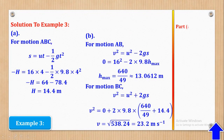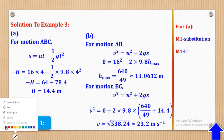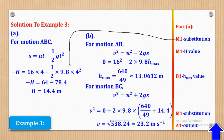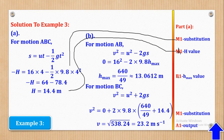Let's see how the marks can be awarded. For part A, M1 is for substitution and A1 for the output. For finding H max, B1 is awarded. M1 is for substituting and A1 is for the output. That's how the 5 marks would come about.